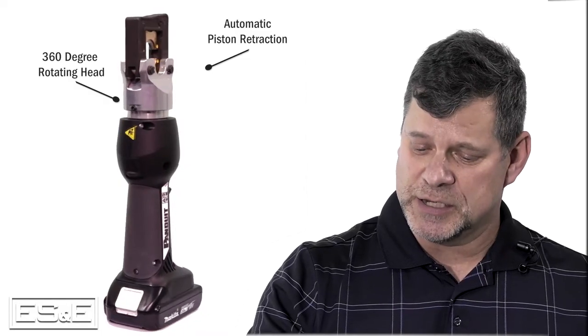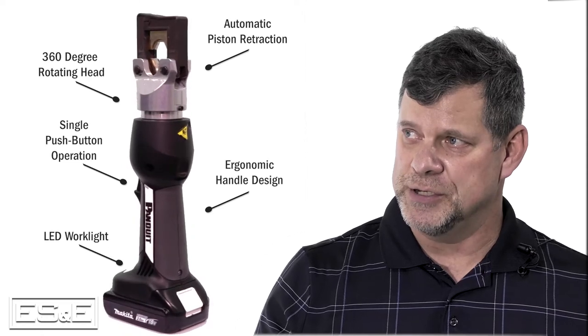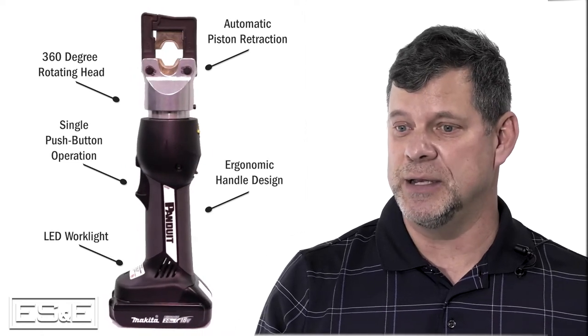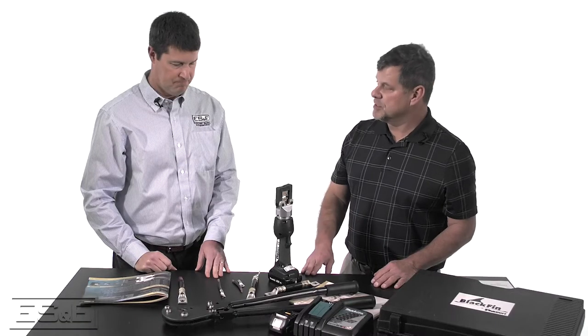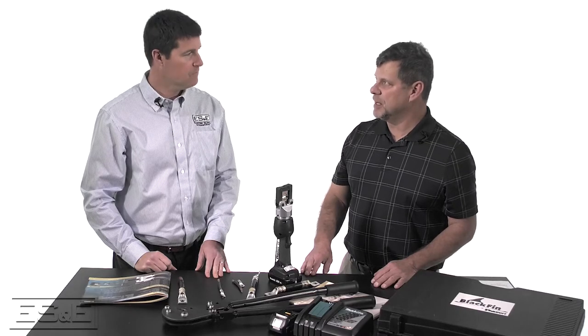And you're going to get about 400 crimps out of a battery charge. And that's crimp cycles. So keep in mind that if a lug takes three crimps, you divide your 400 by three is the number of lugs that you're going to be able to crimp. And the charge time on a battery is about 24 minutes. So it's got a pretty quick recharge on the, it's a lithium ion battery.